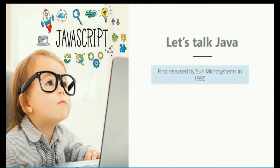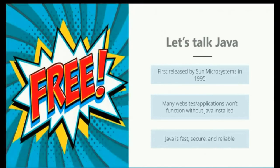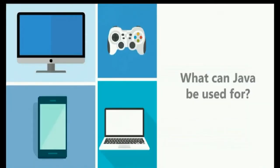Let's talk a bit about JavaScript. JavaScript was first released by Sun Microsystems in 1995. Many websites and applications on your computer will not run unless you have Java installed. Java is a very fast, secure, and reliable coding platform, and the best part is that most of the software is free. Java can be used for desktop computers, gaming, cell phones, and even supercomputers — quite a large range of applications, which is one of the main reasons it is so popular.